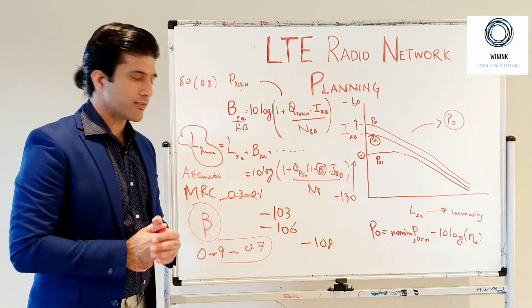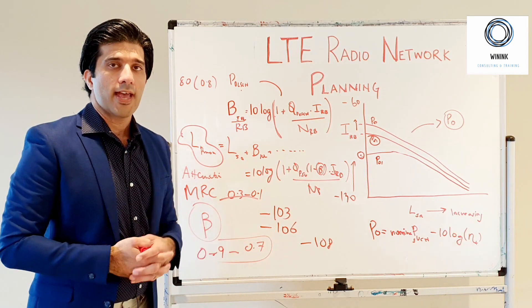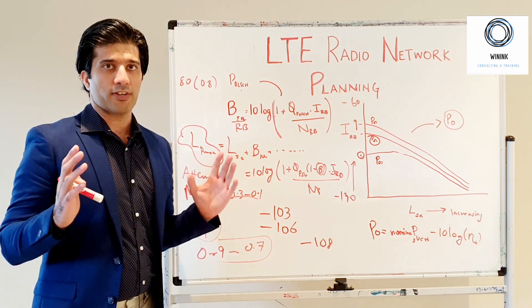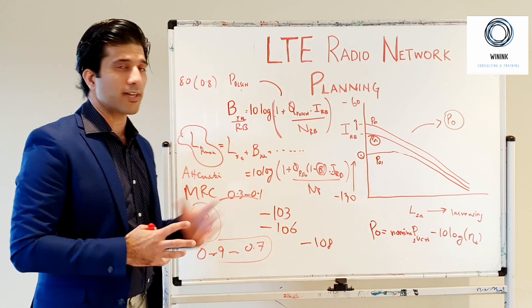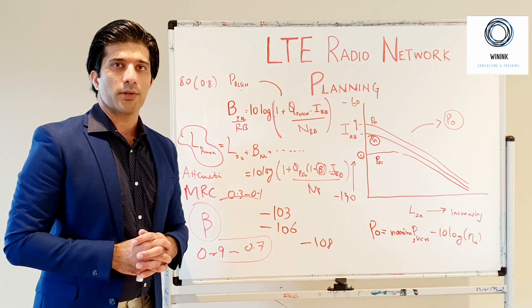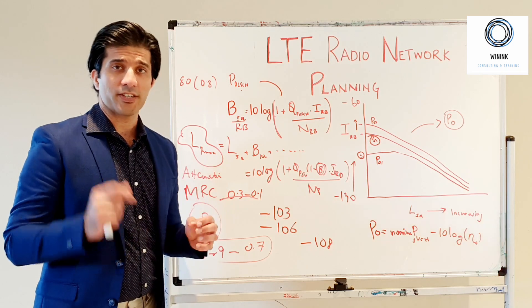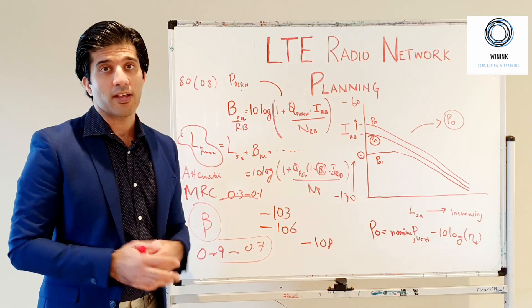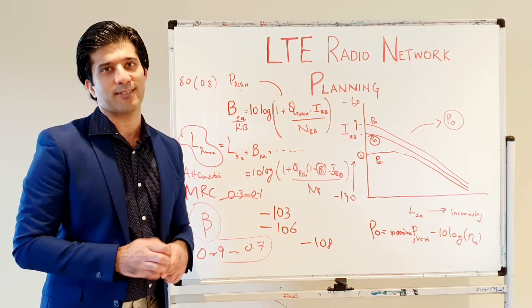Once you have the noise rise values, you put them in the link budget, and then you can have your maximum cell radius, your site-to-site distance, and how many sites you need to have to provide the amount of coverage that you are intending to provide. I think the concept of noise rise or intercell interference in uplink LTE would be clear to you after this video. Please leave your feedback in the comments. If you like the video, please like and subscribe to our channel. Thank you so much for your time, and hope to see you next time.